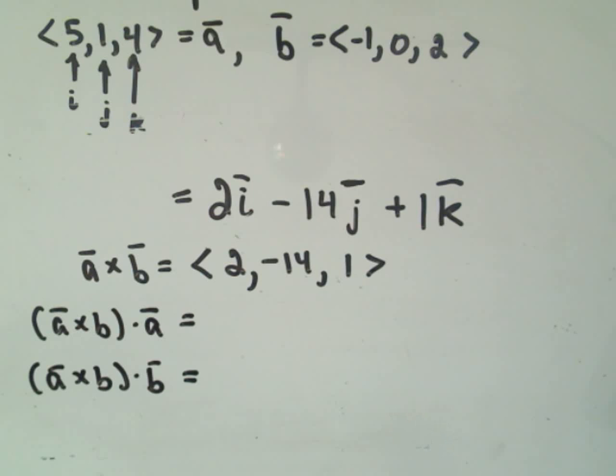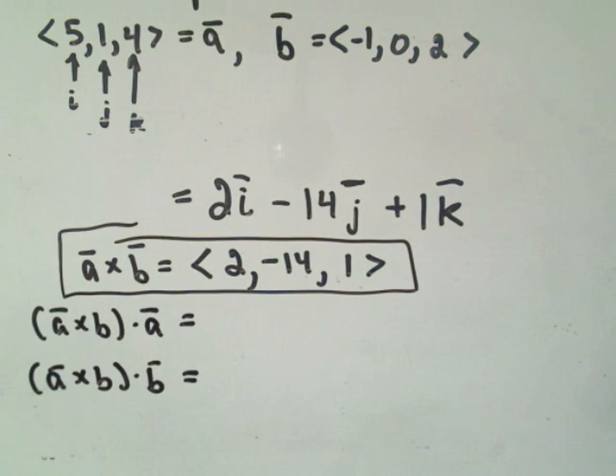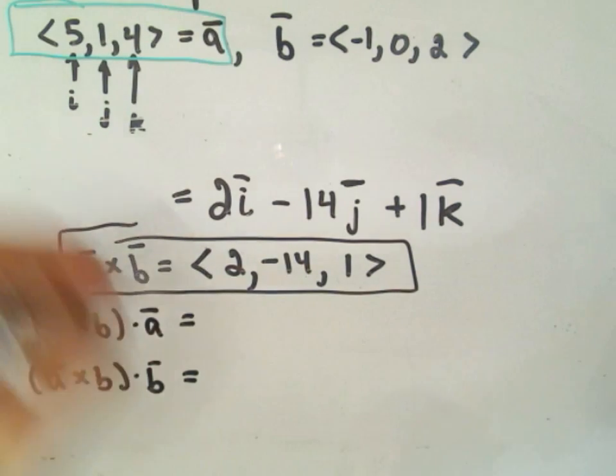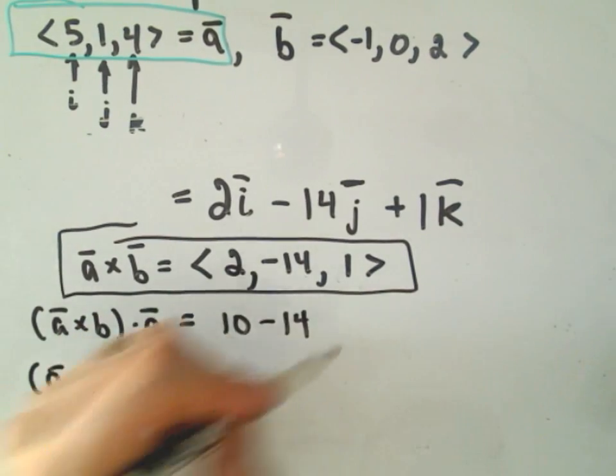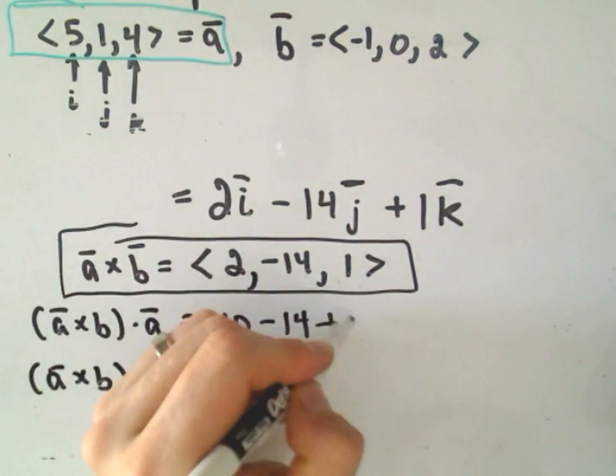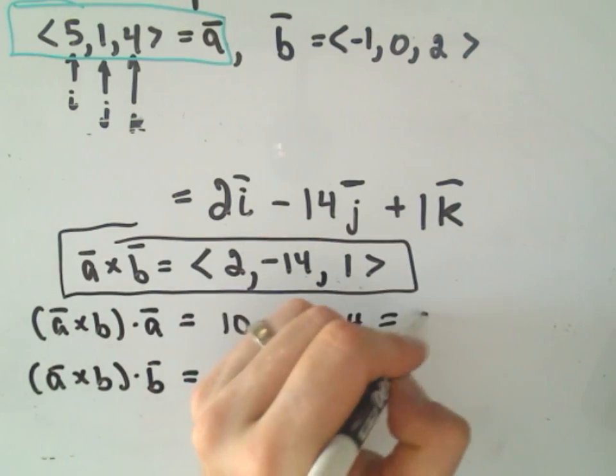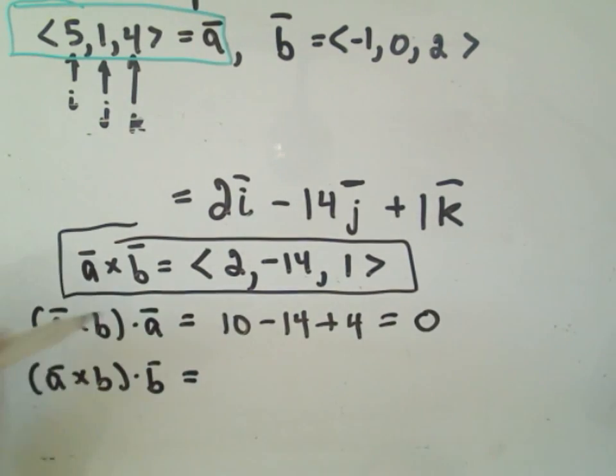So again, obviously if you don't know what a dot product is, hey, I've got a video on that, so feel free to take a look at it. It looks like to me if we take the dot product of our new vector, our cross product vector, and let's say, let's do vector A here first. It looks to me like we'll get 2 times 5, which is 10. We'll get negative 14 times 1, which is negative 14. Then we'll get positive 1 times 4. Okay, hey, that to me looks like we get out 0, which means the cross product is orthogonal to A.